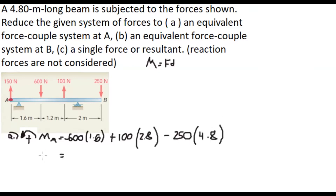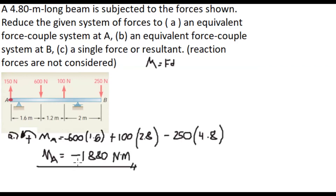Therefore, our moment at point A equals negative 1880 Nm. The negative sign indicates that our assumption is incorrect, meaning the rotation is opposite to our assumed direction. So the moment at point A is 1880 Nm clockwise.